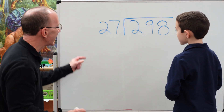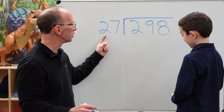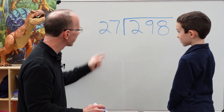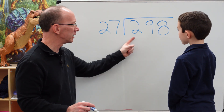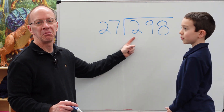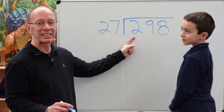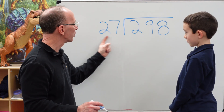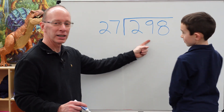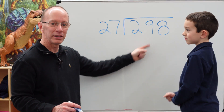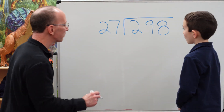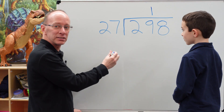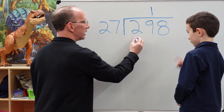Alright Lucas, I have to figure out how many times I can put 27 into this number. Can I put 27 into 2? No, cannot do it. Can I put 27 into 29? Yes. How many times? One time. So we're going to put the 1 right here. 1 times 27 is 27.